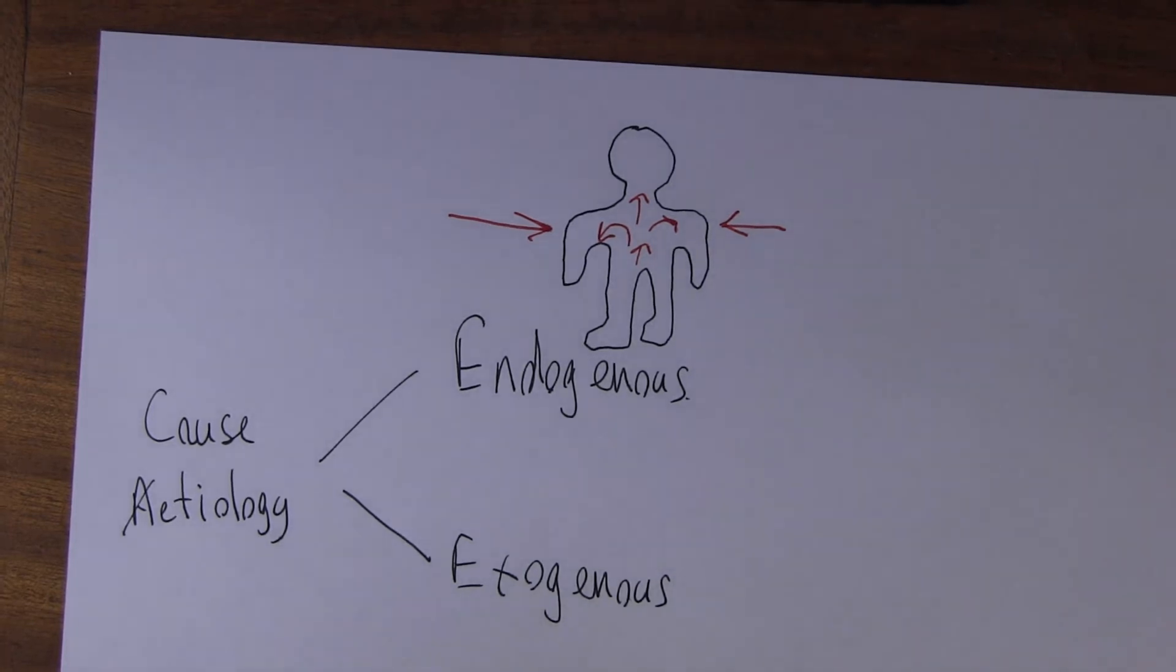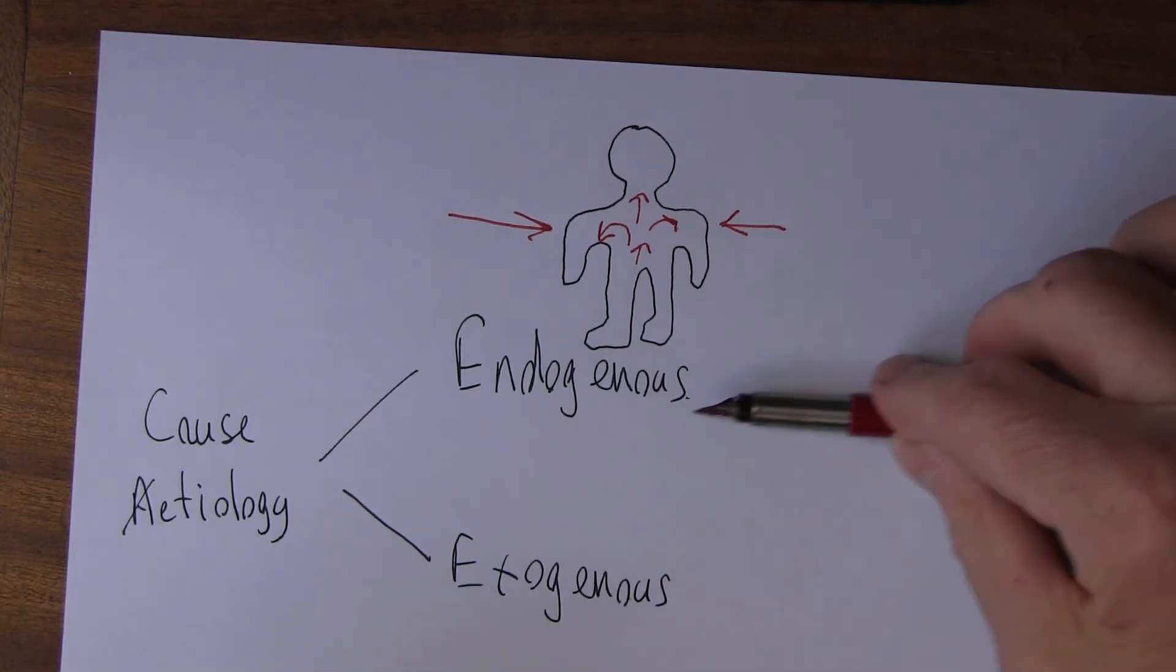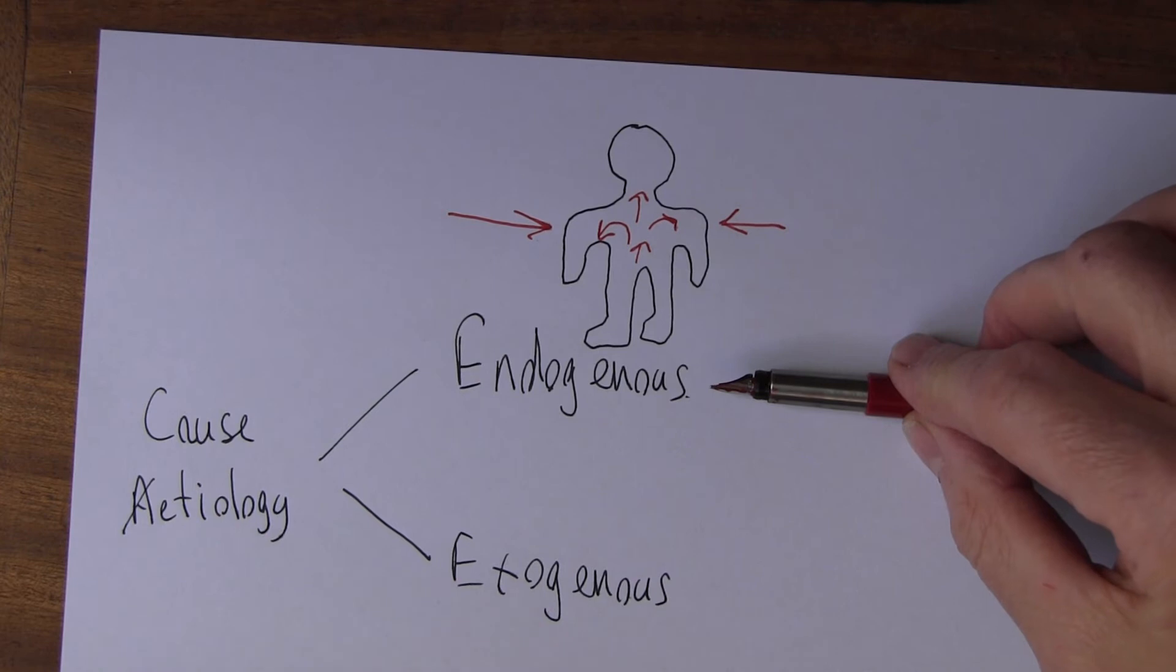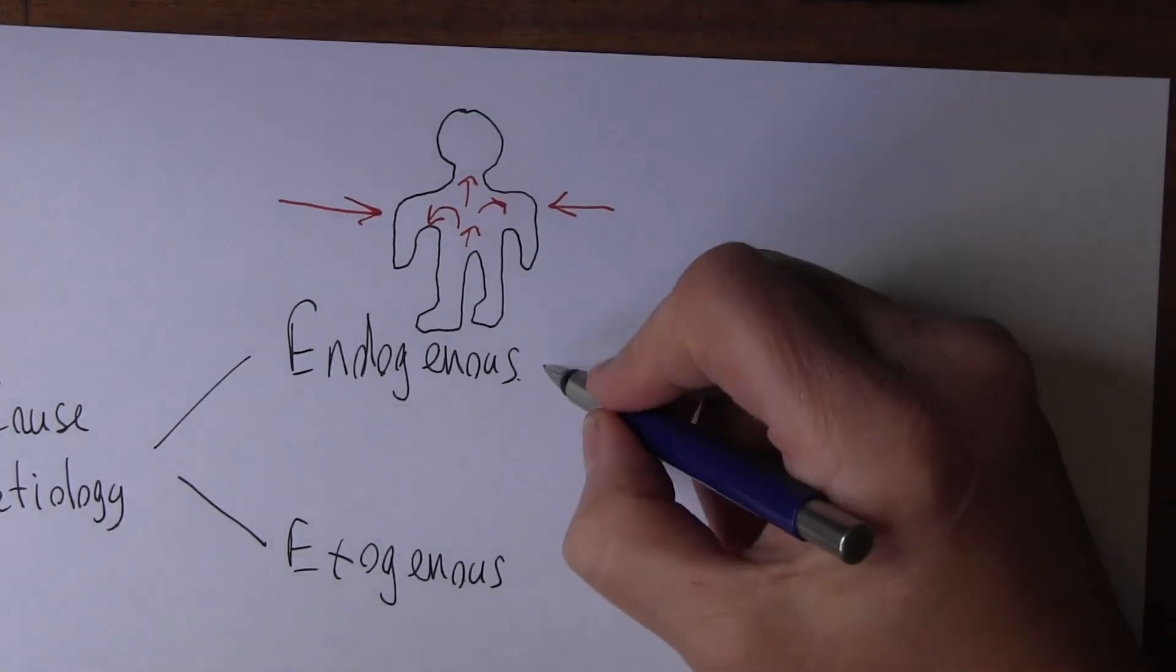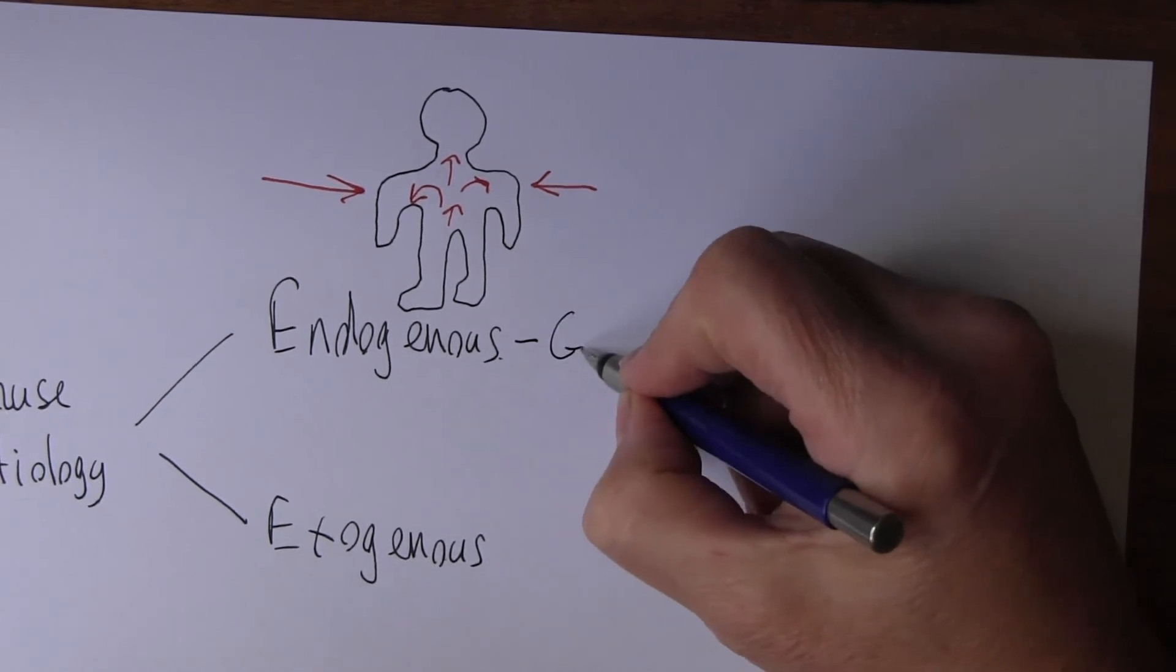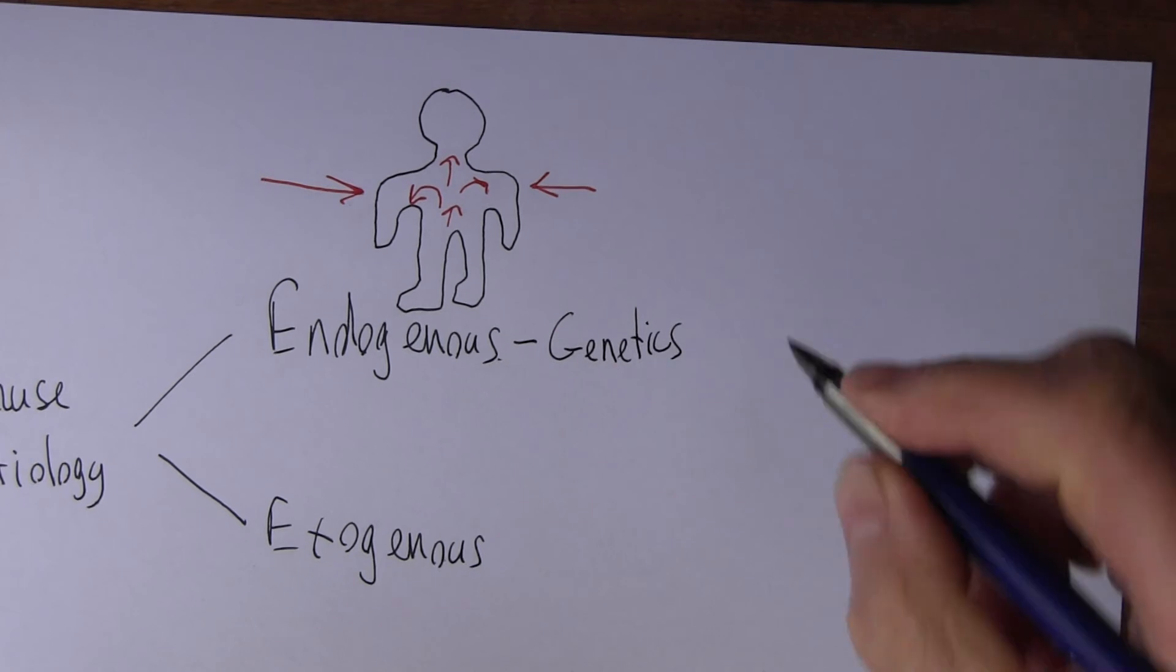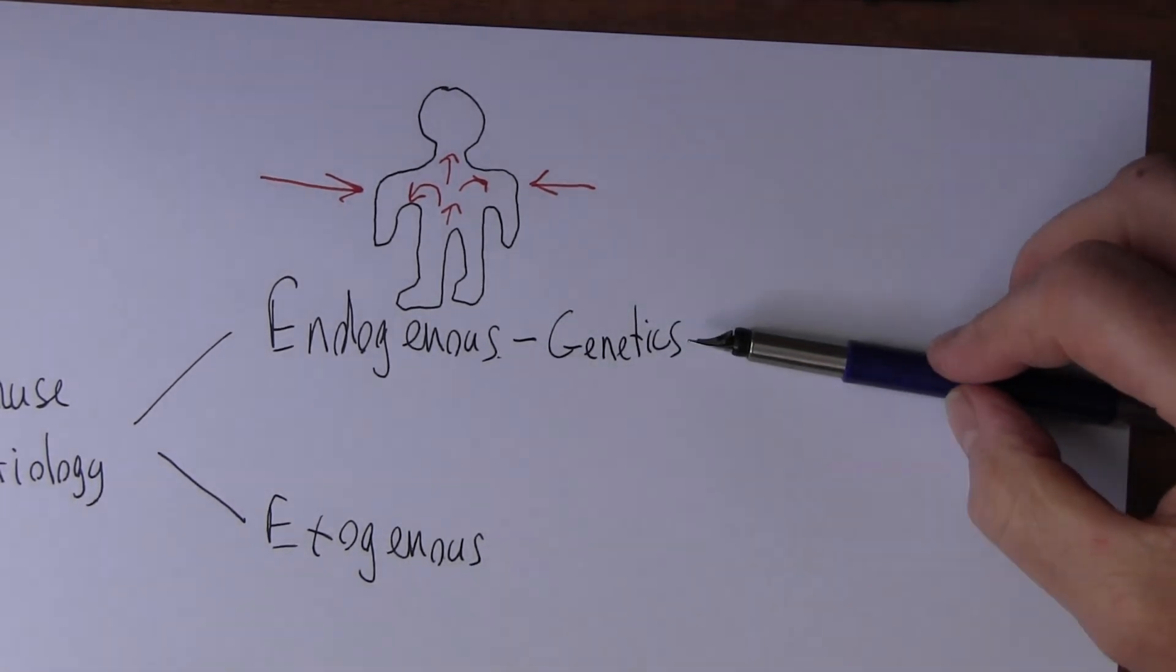When we're thinking about endogenous disease, disease that arises from within, the real true endogenous diseases are the genetic diseases. So endogenous is really we're talking about genetics. Disease is caused by genetics. Genetics is the study of the...